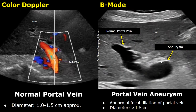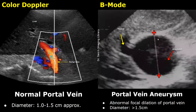Portal vein aneurysm is rare. It is defined as abnormal focal dilatation of the portal vein, with a diameter more than 1.5 centimeters. Some institutions suggest the normal diameter of the portal vein to be between 1 and 1.5 centimeters, whereas other institutions suggest the normal limit to be 1.3 centimeters, so there are some variations in normal values.